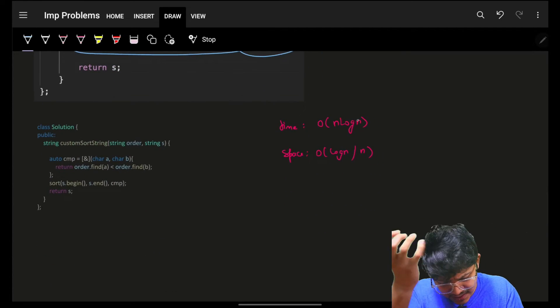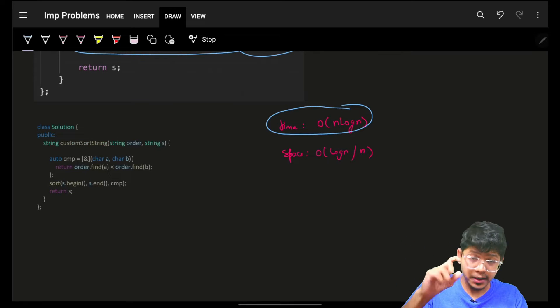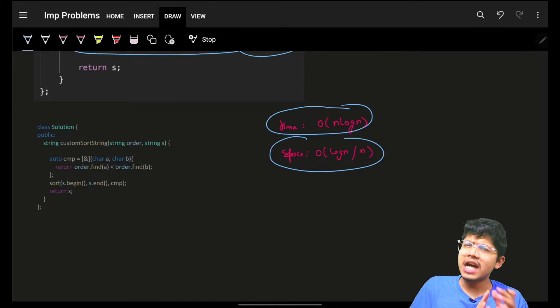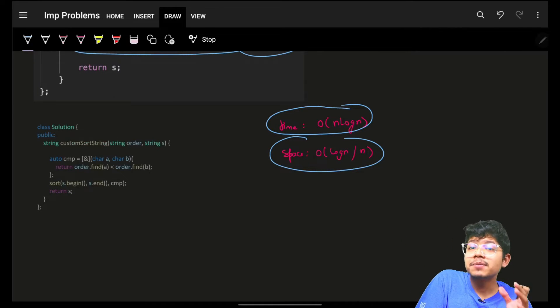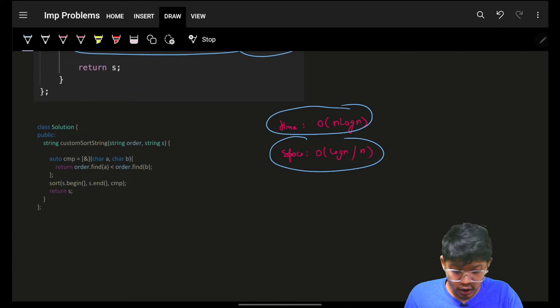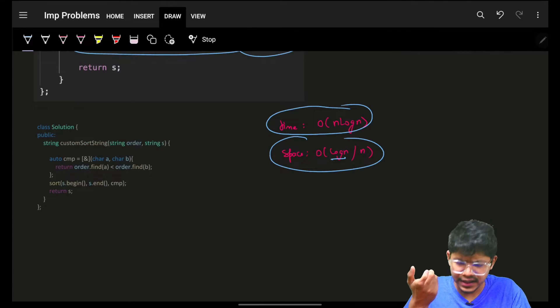The time complexity is O(n log n) due to sorting. Space complexity in Java and C++ is also O(log n) for sorting, but in Python it's O(n).